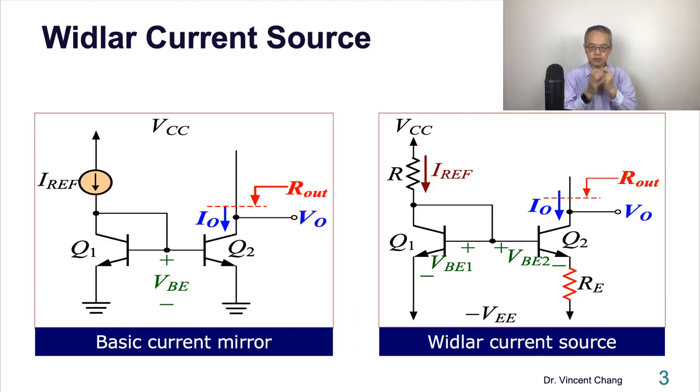So what's the difference? The major difference is the emitter resistance is connected between the emitter of Q2 and the most negative voltage negative VEE is the RE on the right.